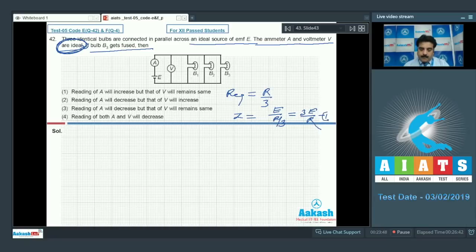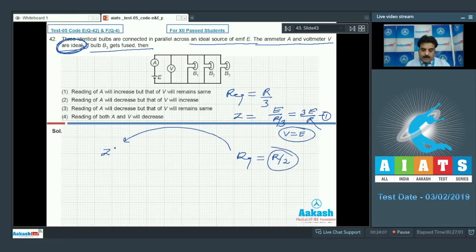This is relation number 1. In the case of ideal conditions, V equals E. When bulb B3 gets fused, the equivalent resistance becomes R/2. Then the value of I dash is 2E by R because the resistance is R/2 and V equals E.